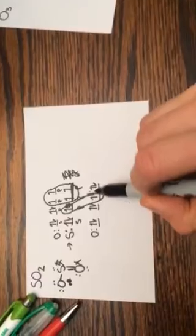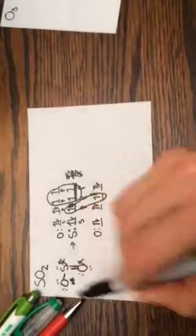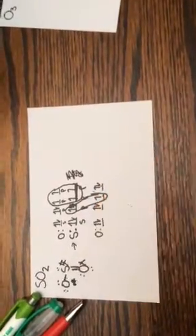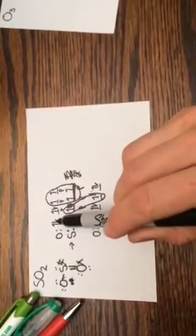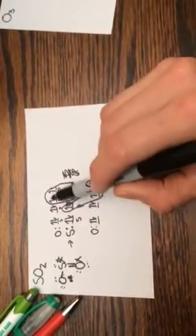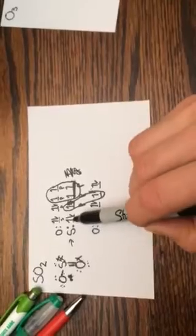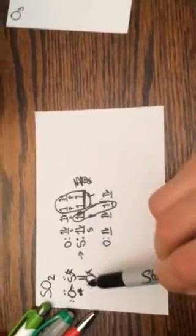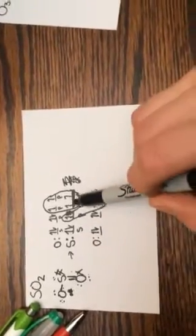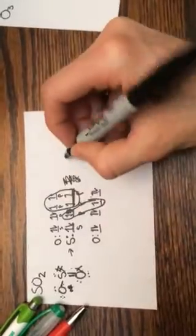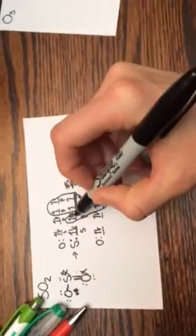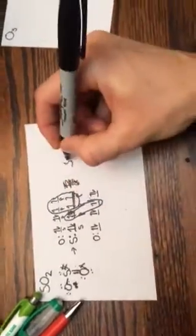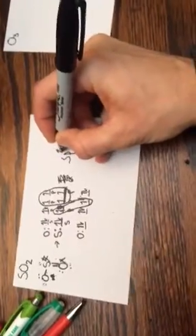We see on oxygen one, two, three lone pairs, one, two, three lone pairs, and one bond, one bond. This oxygen: one, two lone pairs, one, two, and a double bond right there. Sulfur: lone pair, single bond, and double bond right there. So this becomes—there's an S, there's one, two P's: sp2. And there's one, two P's: sp2.